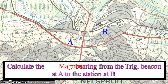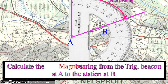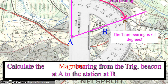In order to calculate the magnetic bearing from the trig beacon at A to the station at B, you must first calculate the true bearing between these two points. The true bearing from the trig beacon at A to the station at B is therefore 64 degrees.